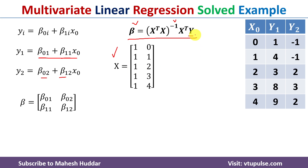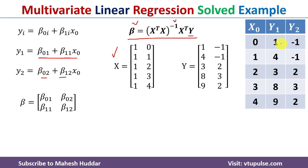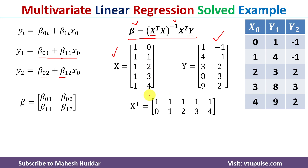The Y matrix consists of the values of y1 and y2 given in the problem definition — those values are written accordingly. Once we have matrices X and Y, we calculate X-transpose by converting rows into columns. So row [1, 0] becomes a column, row [1, 1] becomes the next column, and so on to get X-transpose.